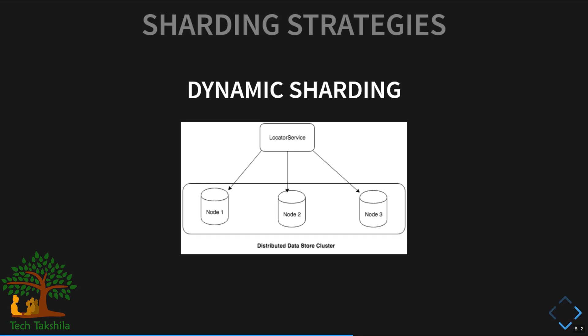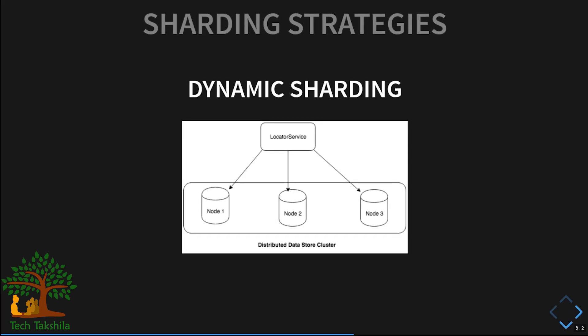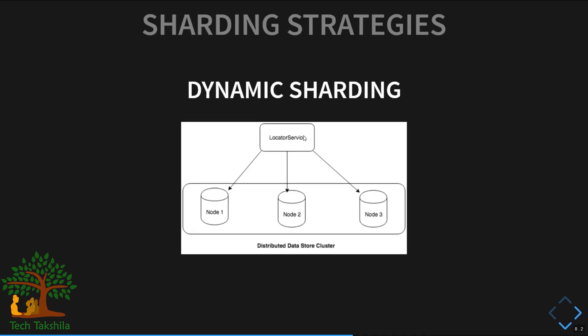An alternative is dynamic sharding. Instead of shipping your sharding code to each database-interfacing machine, you offload sharding work to a separate locator service, whose sole job is to take a partition or primary key and determine where to read from or write to in the database cluster. Most modern databases provide this — MongoDB, HDFS, and Apache HBase, for example. However, the locator service becomes a single point of failure: if it goes down, clients can't get data, or the hash function could go haywire. Modern NoSQL databases come with dynamic sharding prepackaged, so focus your energy on designing a good partition key.